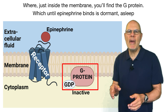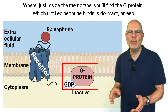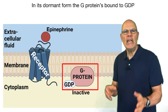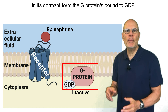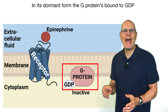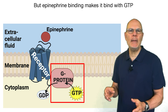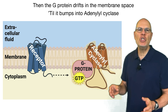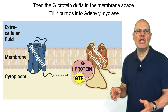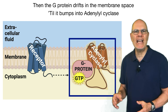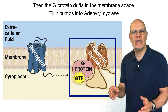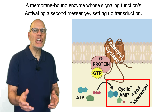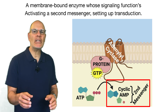Once epinephrine binds at the receptor binding site, the receptor changes shape on its cytoplasmic side. Just inside the membrane you'll find the G-protein, which until epinephrine binds is dormant — asleep in its dormant form. The G-protein is bound to GDP, but epinephrine binding makes it bind with GTP.